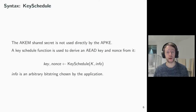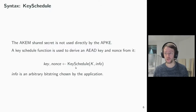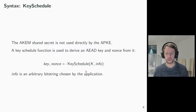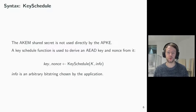In hybrid schemes that you might know already, the KEM shared secret is often directly used as a symmetric encryption key. This is not the case in HPKE. There is an intermediate key schedule function that is used to derive a symmetric key and a nonce. This info variable can be set arbitrarily by the application. The key schedule is needed to support the secret export and the multi-shot APIs of HPKE.